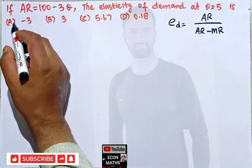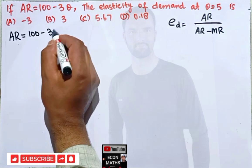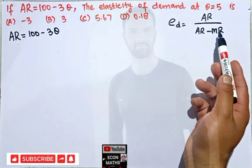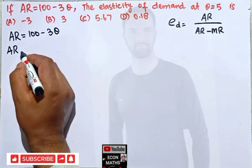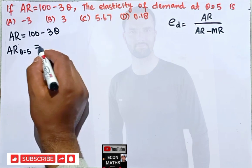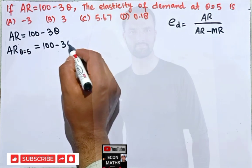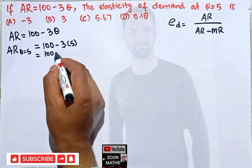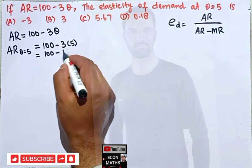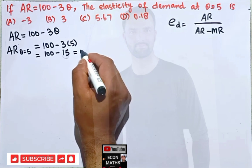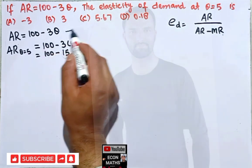We are given that average revenue equals 100 minus 3Q. So average revenue at Q equals 5: we substitute Q = 5 into the average revenue function, giving us 100 minus 3 times 5, which is 100 minus 15, equal to 85. So we have the average revenue as 85.